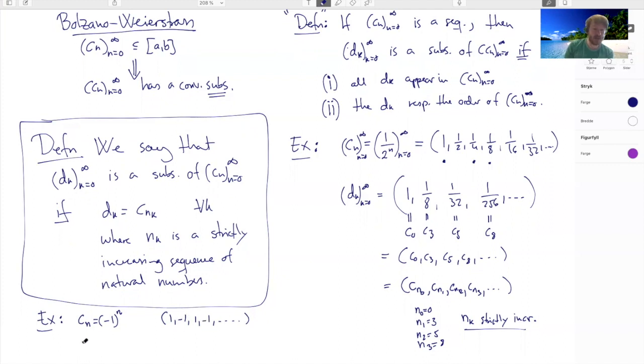But if I do Nk equals 2k, meaning my D0 is C0, my D1 is C2, my D2 is C4, and so forth, this is just 1, 1, 1, 1, etc. This certainly means that my Cnk, which is C2k, which is just 1, is a convergent subsequence.